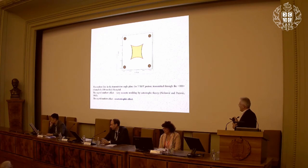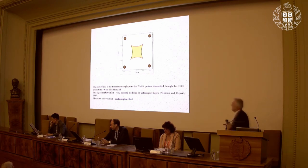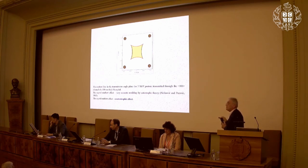This is the rainbow line in the observation space with four atomic strings. This is the rainbow line, this is the bright side of the rainbow, and this is the dark side. We demonstrated in 1987 that this effect can also be modeled very successfully by catastrophe theory, and that is why we call it a catastrophic effect.